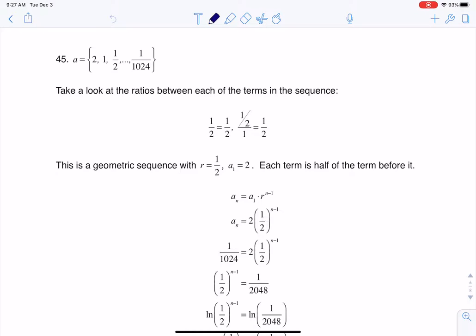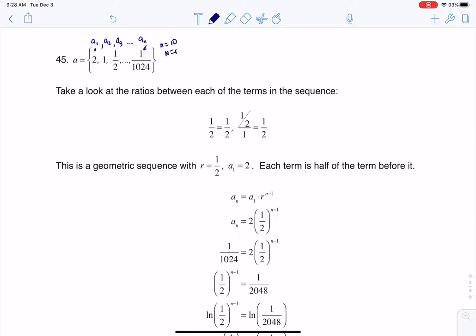So at this point, if I take a look at what I have here, I know a sub 1 is equal to 2, a sub 2 is equal to 1, a sub 3 is equal to 1 half, and I just don't know what this term is. Is n 10, is n 1,000, is it somewhere in the middle? Like how many terms did it take us before we got to 1 over 1,024?